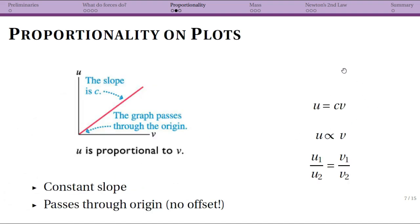You can now think about what this is going to look like on a plot. So in this case, u is like our y value and v is like our x value. So there you go. This is a linear plot where c is telling you your slope.